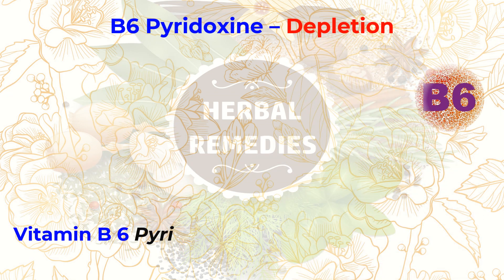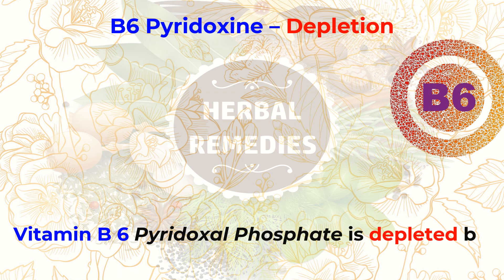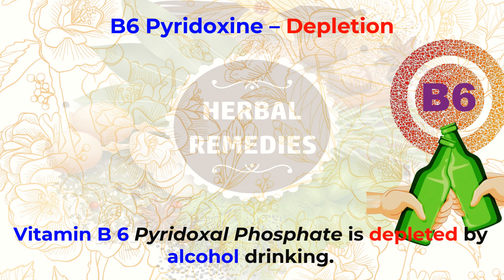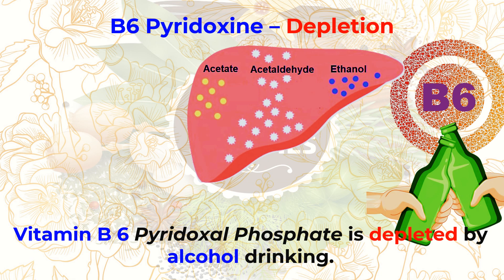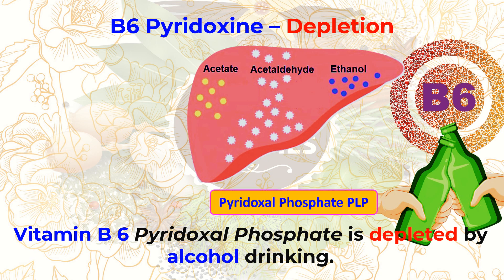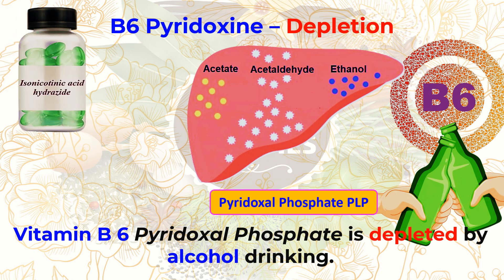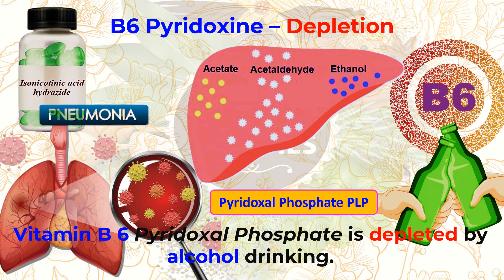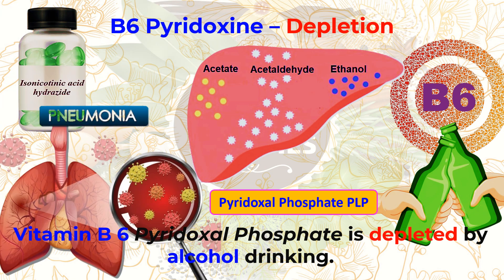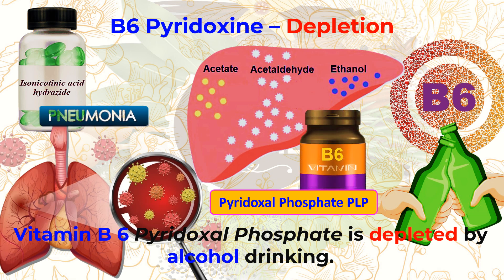Vitamin B6 is depleted by alcohol. Drinking alcohol is broken down to acetaldehyde in the body, and acetaldehyde breaks the PLP coenzymes loose from their enzymes, so the PLP is lost. Some drugs, such as isonicotinic acid hydrazide used for the treatment of tuberculosis, also deplete the body of vitamin B6, and doctors prescribe supplemental vitamin B6 to those patients.